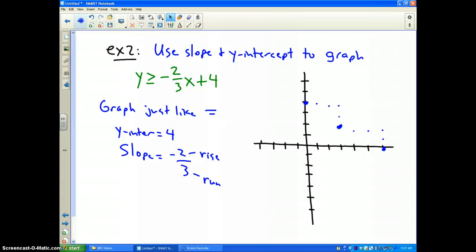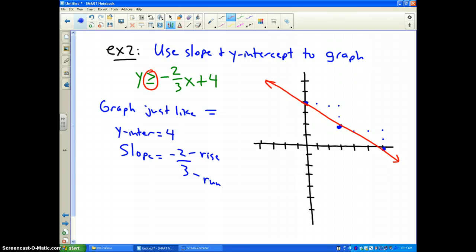Now, before I draw my line, I need to check my inequality sign. My inequality sign is greater than or equal to, which means those boundary points do work on my graph. So, I can draw a solid, hopefully straight line.